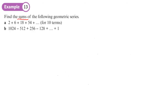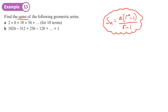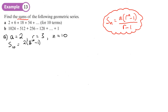We need to find the sums of these terms, so let's write down the formula. We need a, r, and n. For part a: a is 2 because that's the first term, r is 3 because that's what you multiply to get the next term, and n is 10 because it says 10 terms. Plugging in: the sum of 10 terms equals 2 times (3 to the power 10, minus 1) all over (3 minus 1), which gives 59,048.